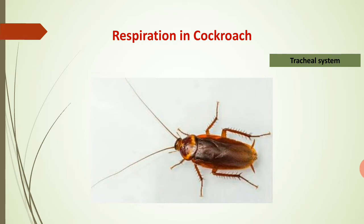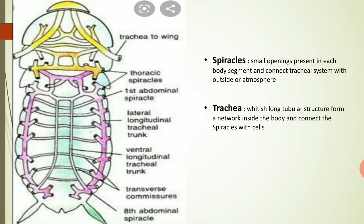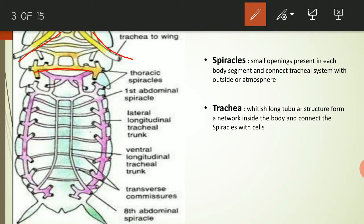Cockroach is an insect and they have some special type of structures that are involved in their respiration. If we cut the body of the cockroach, we can see that inside their body there are some whitish tube-like structures. These structures are known as the trachea, and these trachea open into each and every segment of their body through small openings.